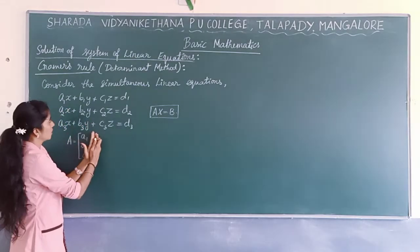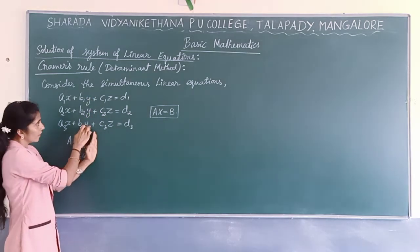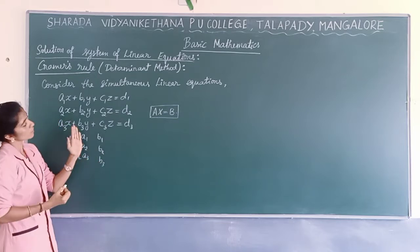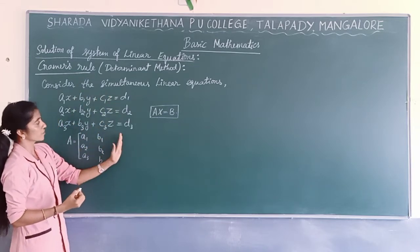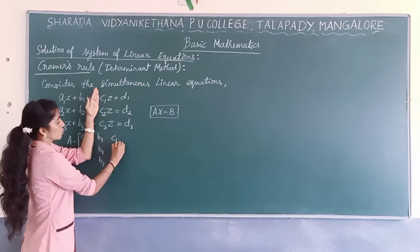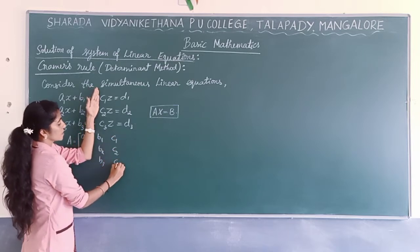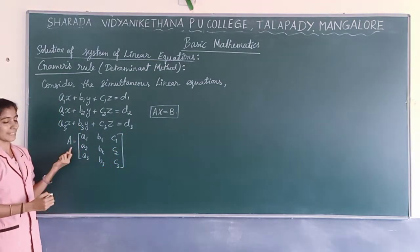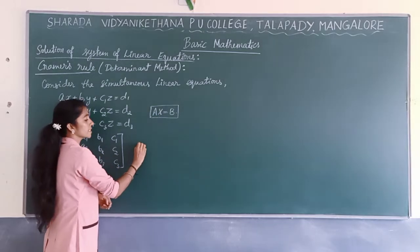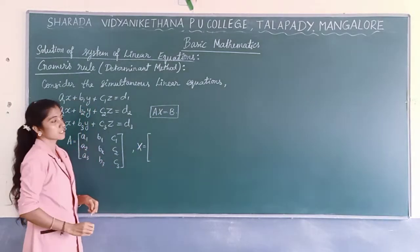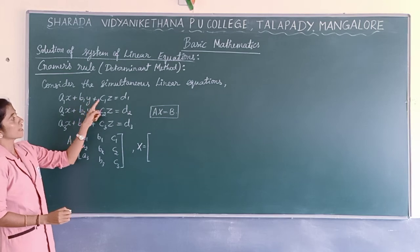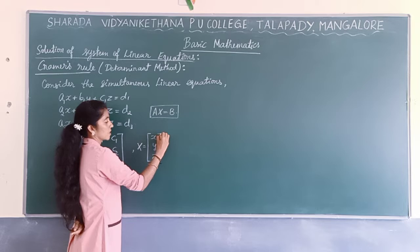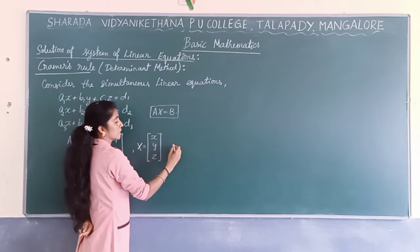Now let us move on to the second column. Here I write the coefficients of Y, so that is B1, B2, B3. Now the third column contains the coefficients of Z: C1, C2, C3. This represents matrix A. Matrix X is a column matrix of the variables X, Y, Z.